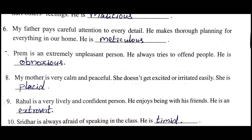Ninth sentence: 'Rahul is a very lively and confident person. He enjoys being with his friends.' The answer is 'extrovert' - extrovert means very lively, confident and enjoying time with friends. Tenth and last sentence: 'Shridhar is always afraid of speaking in the class.' The answer is 'timid' - timid means afraid, fearful of something. A person who is scared and gets fearful easily is called timid.